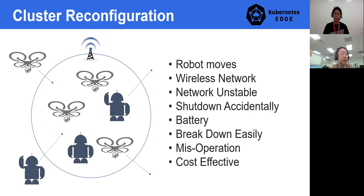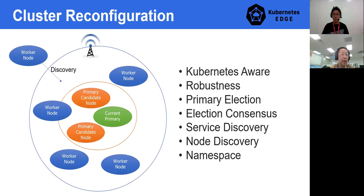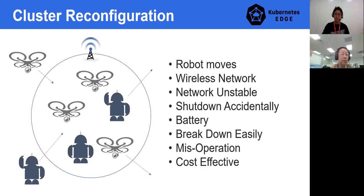Finally, we are going to talk about dynamic cluster reconfiguration. In an edge environment, there are situations different from cloud infrastructure. Robots move, vehicles move — meaning robots can accidentally move out of the network. Usually wireless networks are used in edge devices, which we can say is an unstable network. Additionally, edge devices can be easily shut down or powered off, including misoperation, and work with batteries, break down easily, and cost should be well considered. Going with this situation, using a cluster system in edge has to be robust and reconfigurable without manual operation. Some methods are provided such as high availability, but we say it should be more dynamically reconfigured on edge devices.